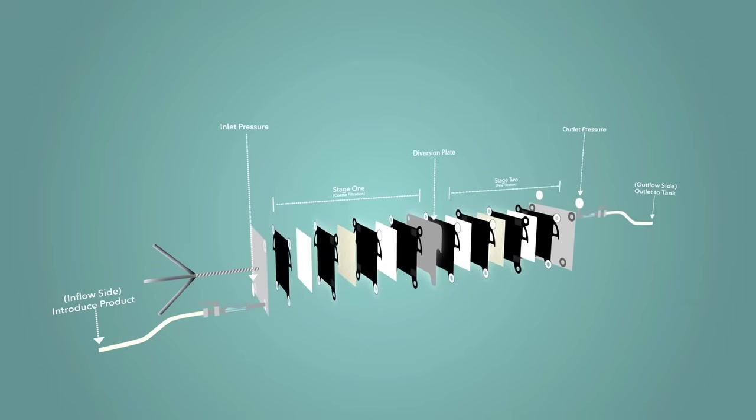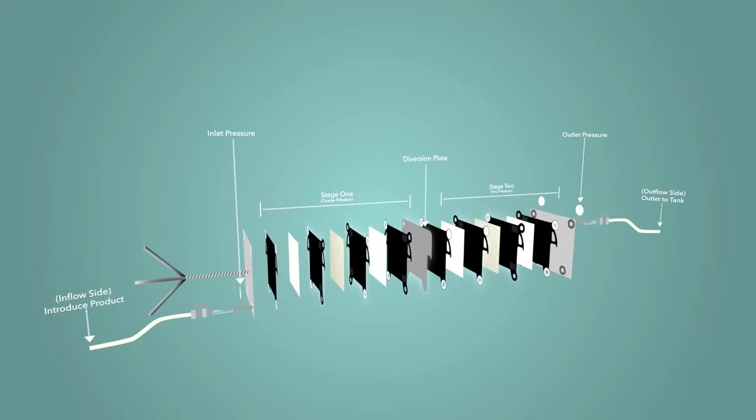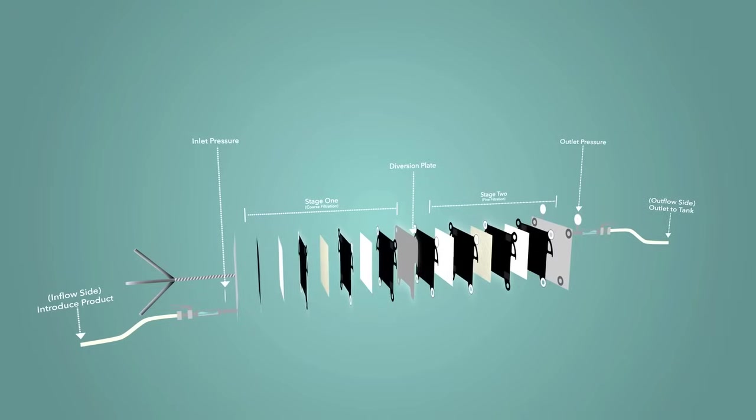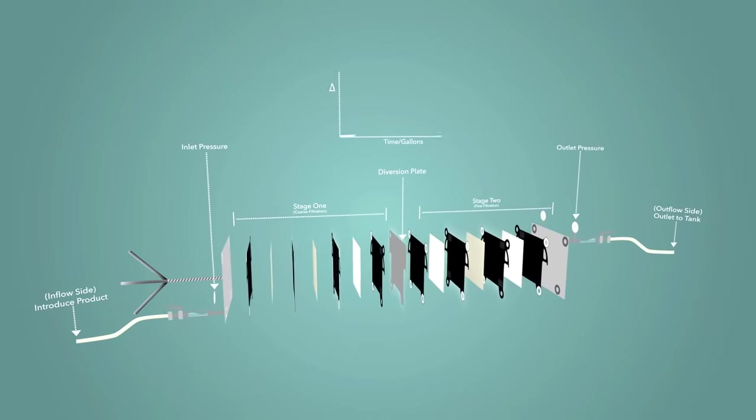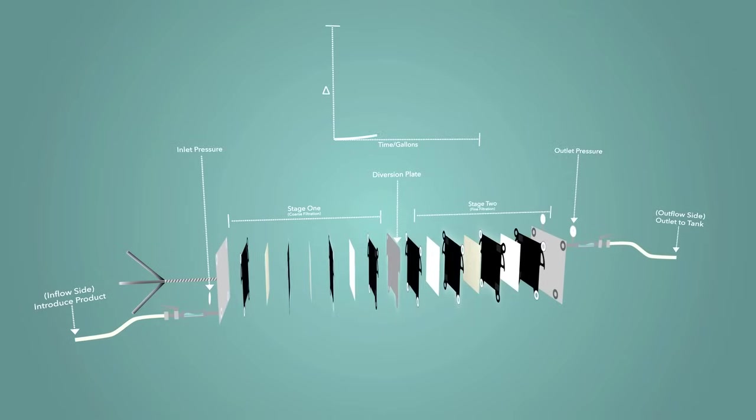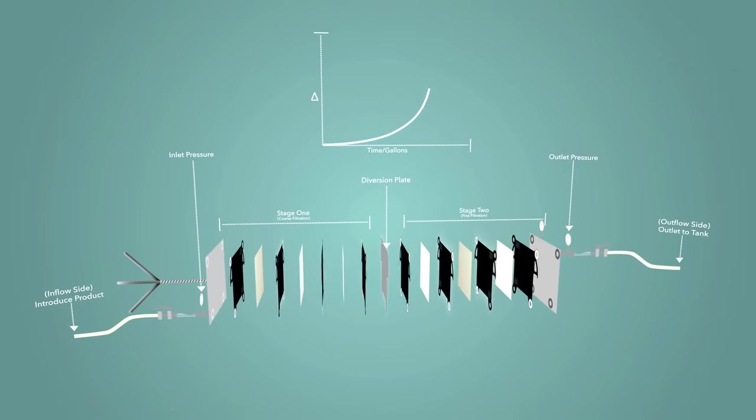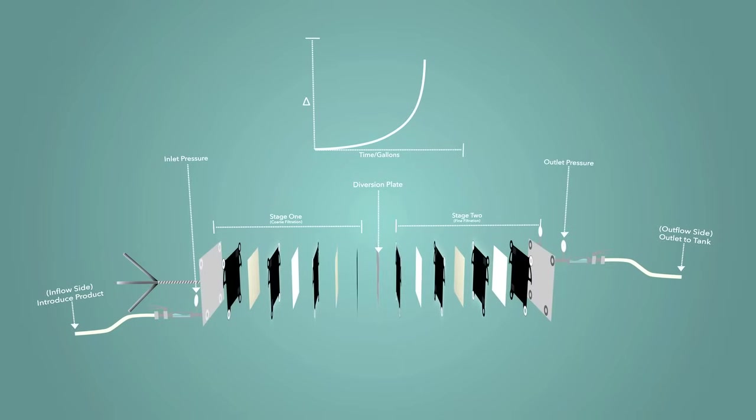During filtration, follow optimal flow suggestions from your manufacturer. Optimal conditions for sheet filter sheets are available from Scott Laboratories. As the filtration progresses, pressure will increase as solids are retained by the filter sheets. Graphically, this is seen as an exponential growth in pressure. As time passes and gallons are filtered, pressure will increase at an accelerated rate.